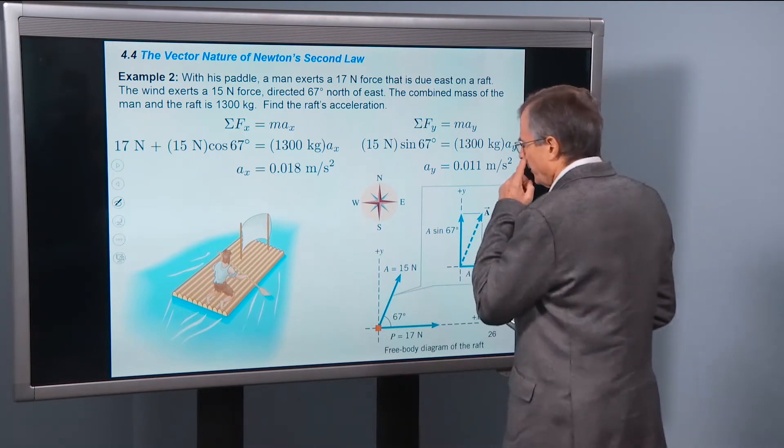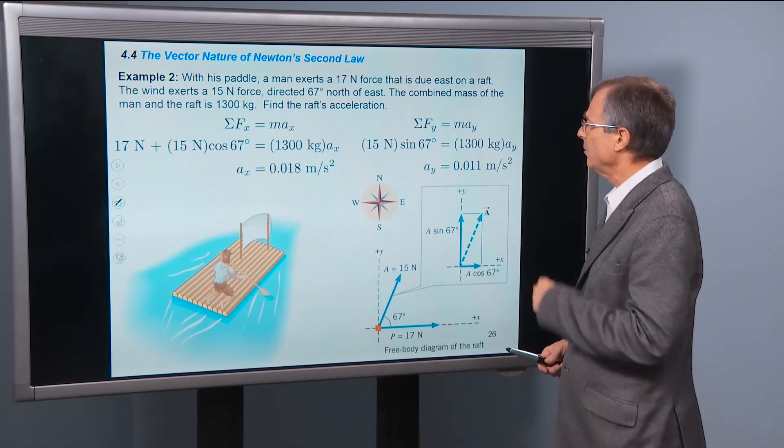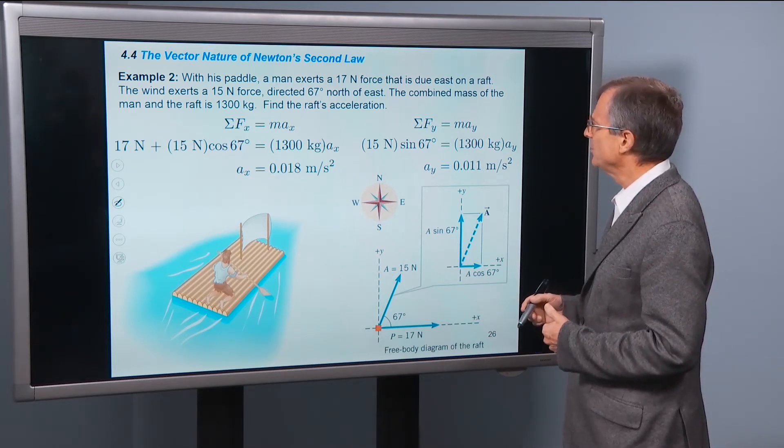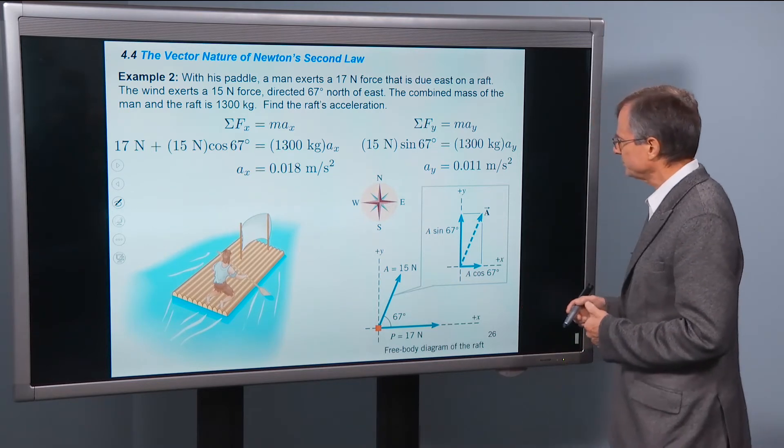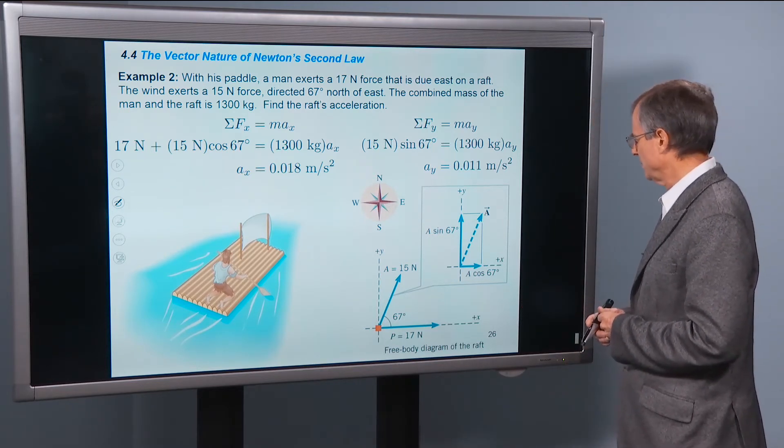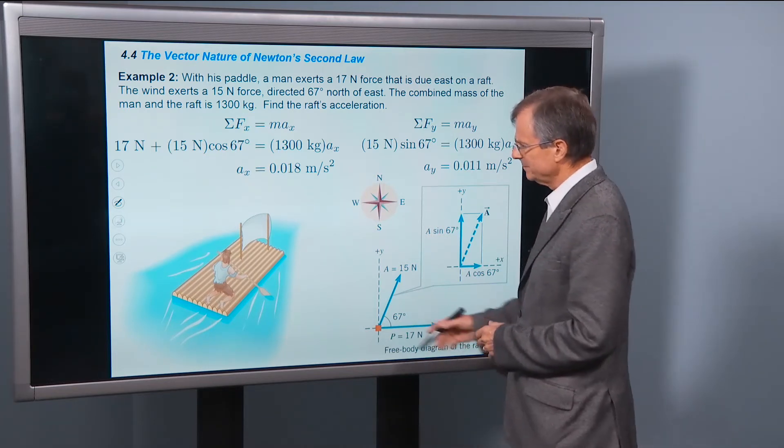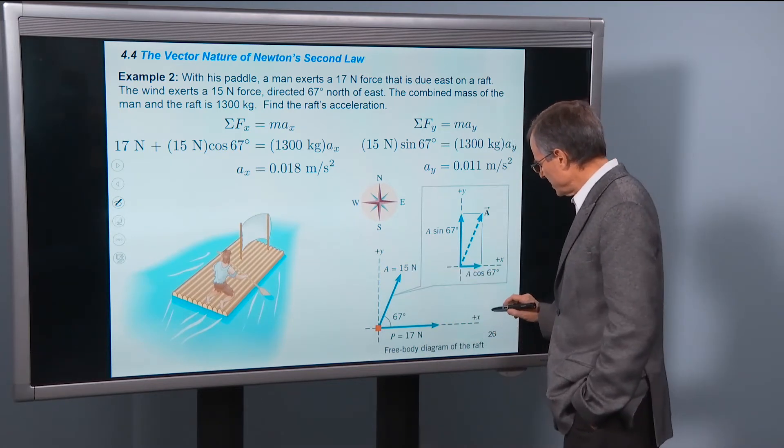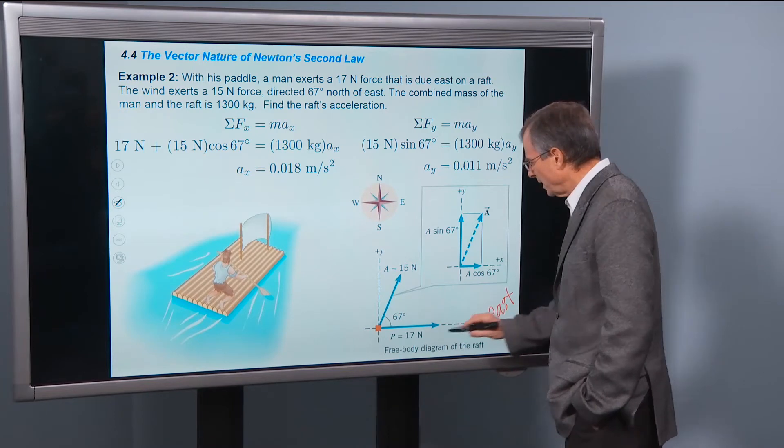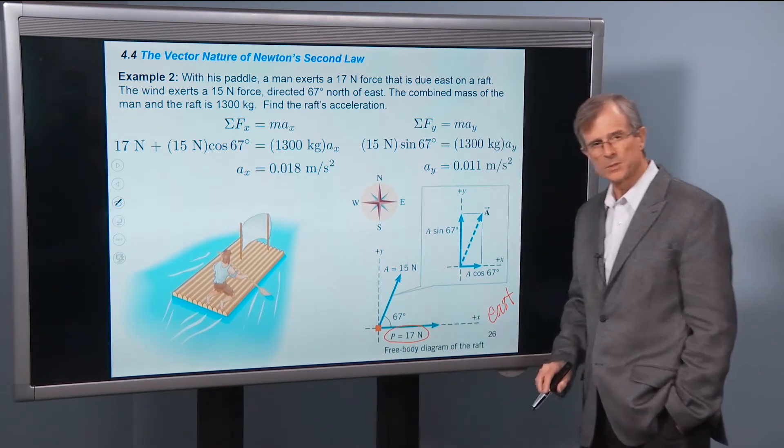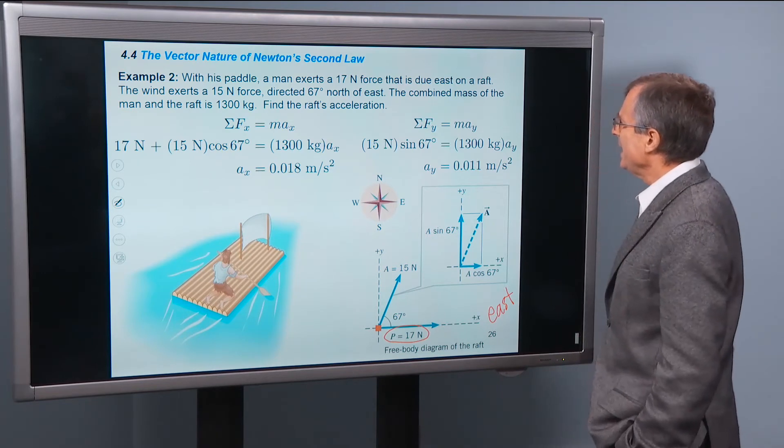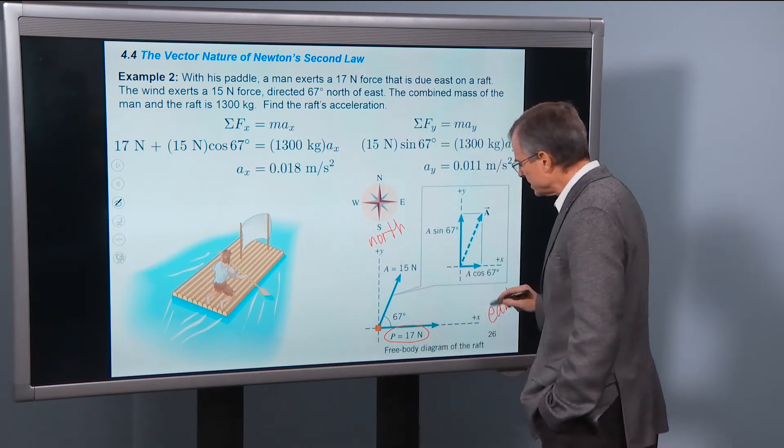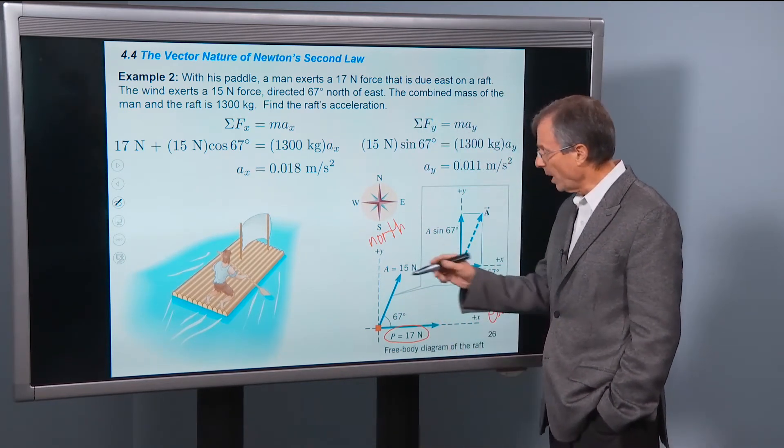All right, another example. This is a vector example, and an important one. The paddle, a man's exerting a 17 newton force that is due east on a raft. So, this is kind of a confusing diagram, but let's just look at this one. So if this is east, he's exerting a 17 newton force toward the east. And if this is north, so in this case, x is to the east and y is to the north.